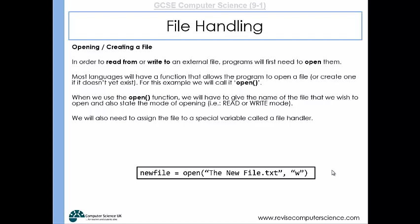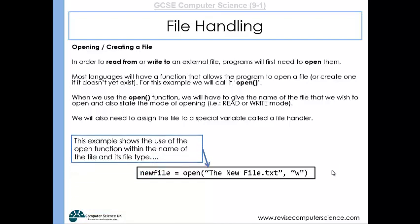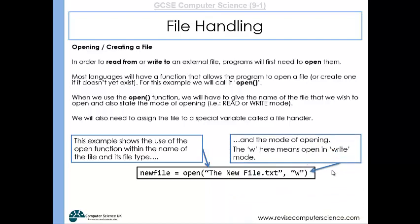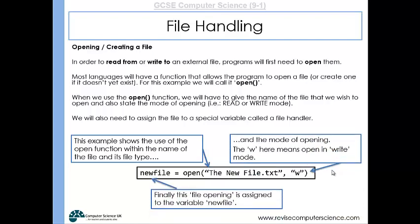Here's an example. We've got the file handler called newfile, and that is being assigned the file that exists external to the program. Here we are opening up the newfile.txt, a text file, and we're opening it up in write mode so that we can then write to the file. Newfile is the variable, it's the file handler.